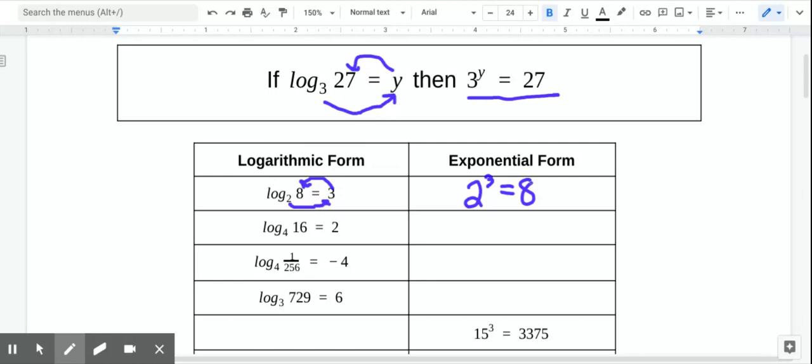Log base 4 of 16 equals 2. You're thinking 4 to the 2nd power equals 16. Log base 4 of 1 over 256 equals negative 4. 4 to the negative 4 equals that fraction. And log base 3 of 729 equals 6. What you're thinking is 3 to the 6 equals 729.